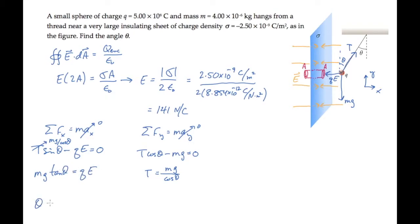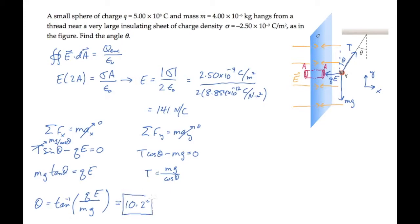The angle theta equals the inverse tangent of the electric force magnitude divided by the weight. When you substitute all the numbers given in the problem statement along with the electric field magnitude, you find that the equilibrium angle theta is 10.2 degrees.